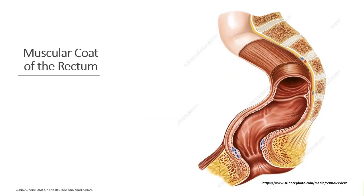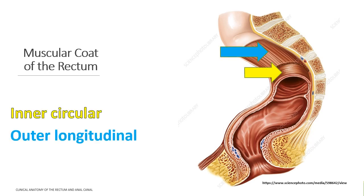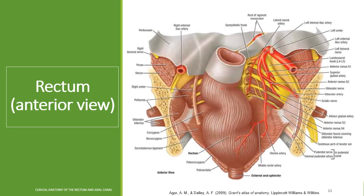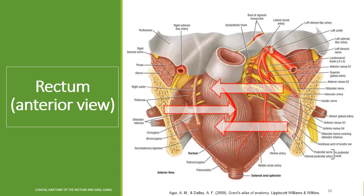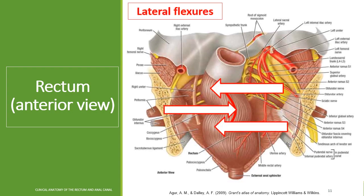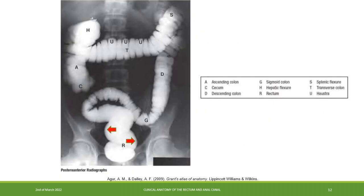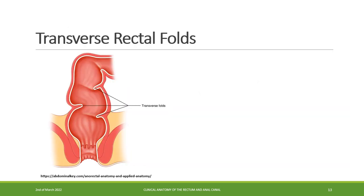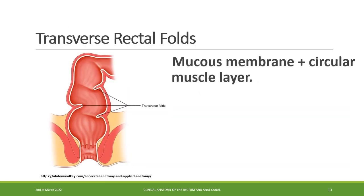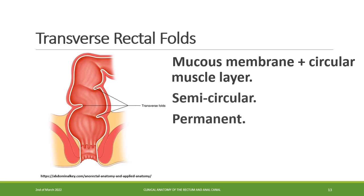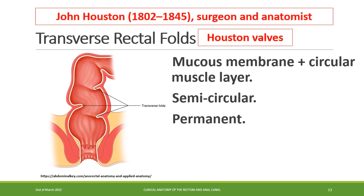The muscular coat of the rectum consists of an inner circular layer and an outer longitudinal layer. The rectum deviates to the left and then returns to the median plane, creating three lateral flexures. These flexures can be seen in this radiograph. Transverse rectal folds are made of mucous membrane and the circular muscle layer. They are semicircular, they are permanent, and they are also called Houston valves, after John Houston.